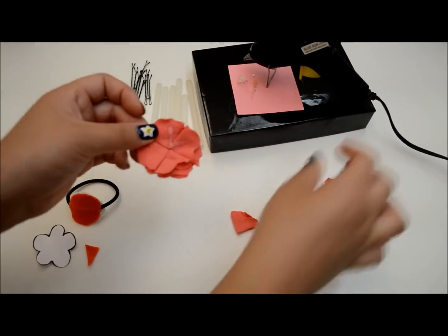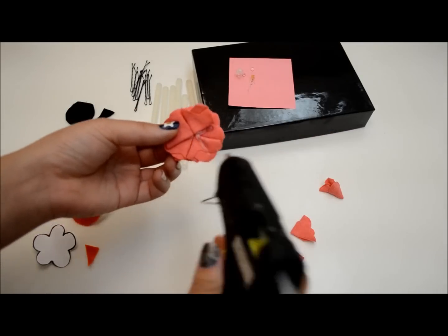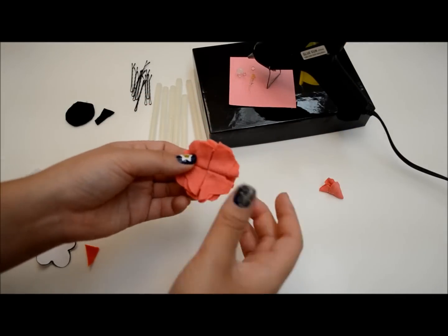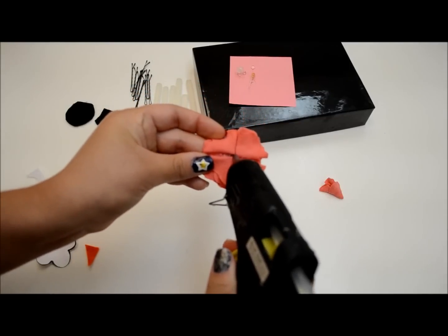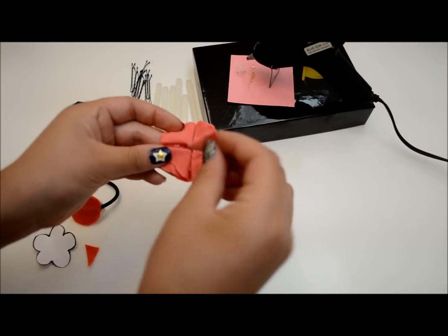To add the second layer, make a V of glue in between two of the first layer petals. Place some glue in the middle of the four petals for the center of the flower.